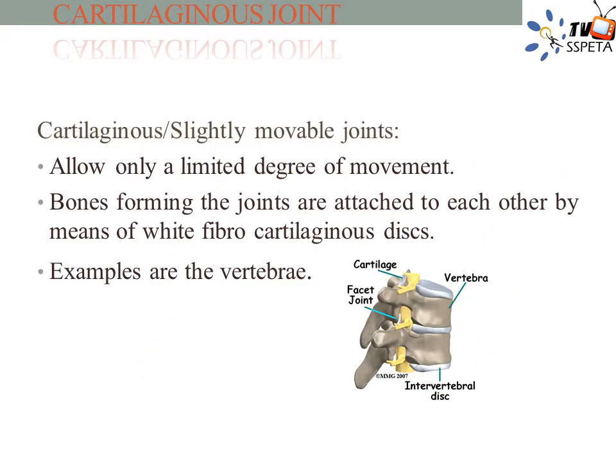Slightly movable joints or cartilaginous joints — this joint permits slight mobility, more than what is seen in a fixed joint. The binding tissue in this type of joint is cartilaginous in nature. An example of a slightly movable joint is those found between intervertebral discs.